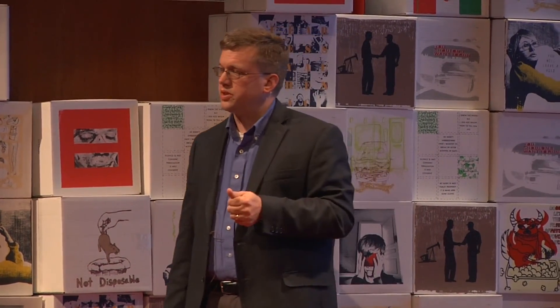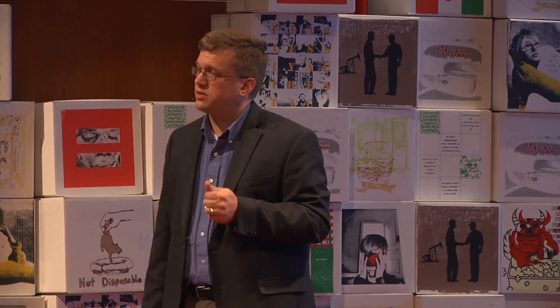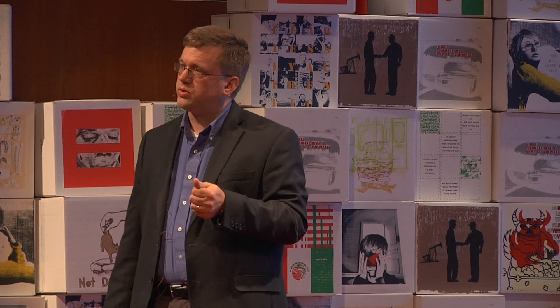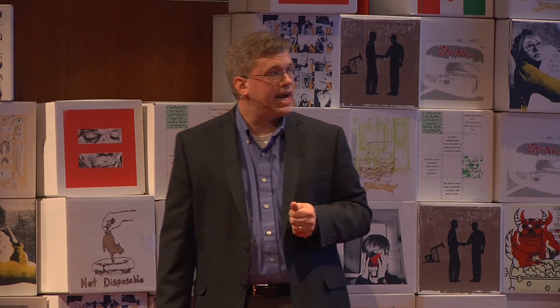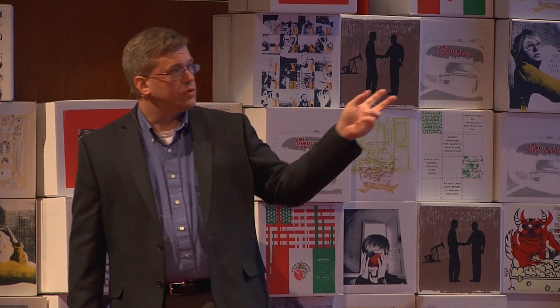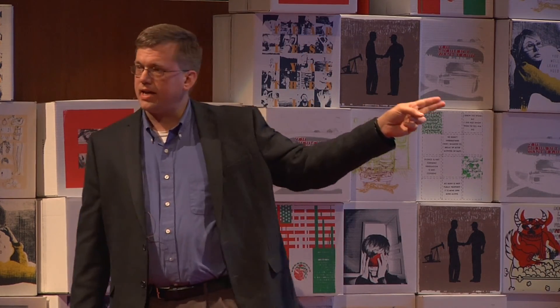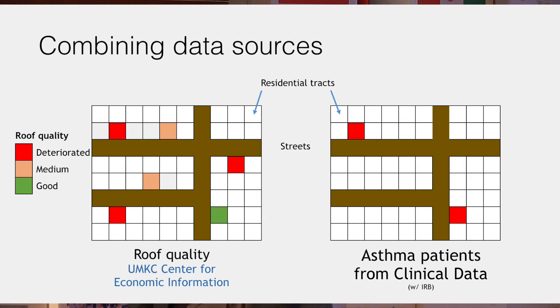When you think about asthma, one of the risk factors is exposure to mold. If you have a leaky roof, your house is likely to be more prone to having mold. What happens when you take that data about housing quality and combine it with clinical data about asthma patients?